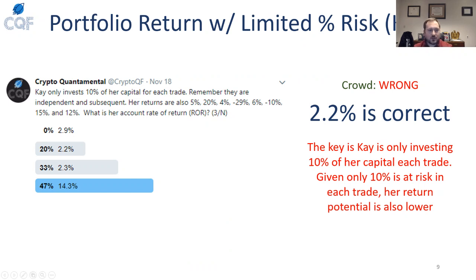What about Kay? Kay only invests 10% of her capital per trade with exact same returns per trade. You see a lot of people in crypto where they're only risking 5%, 2%, or 10% per trade — this gives you an idea of what happens to your return potential when you do that. It also impacts your volatility and risk. When you do something like 10% of your capital per trade, your volatility goes way down and your return actually goes way down too. The crowd got this wrong, voting for 14.3% — the right answer is 2.2%.